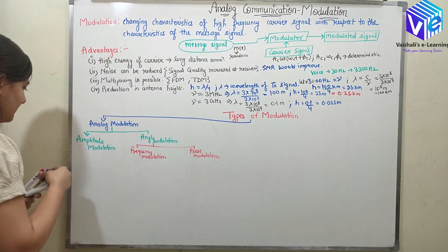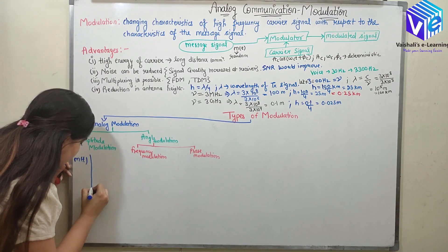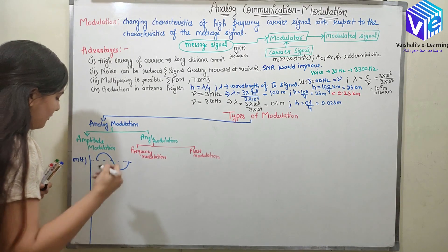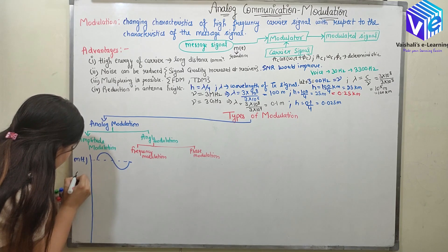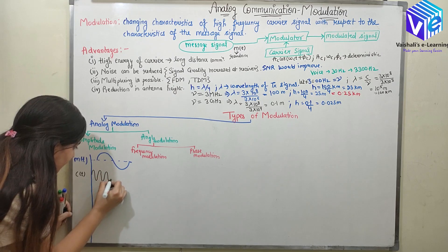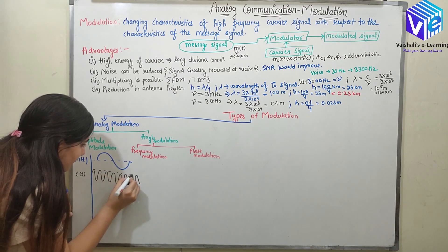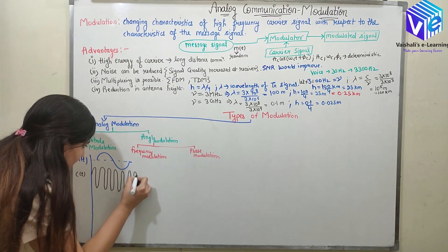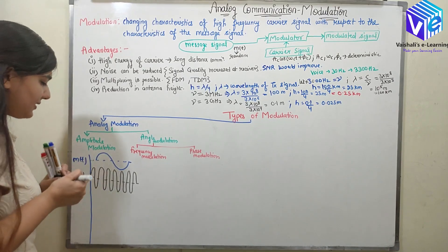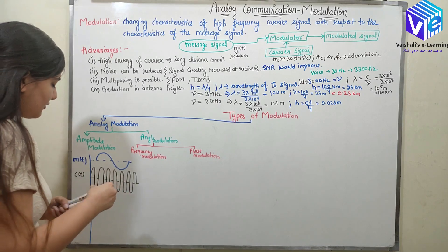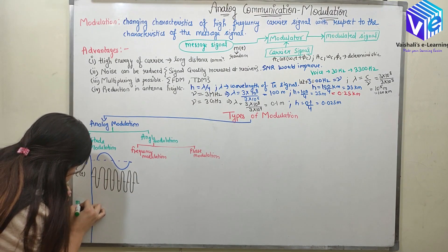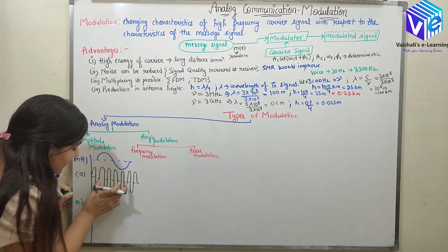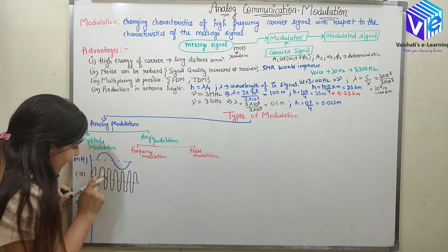Let's suppose our signal is represented — this is our message signal. This is my message signal; it's not starting from zero. Now this is my carrier signal C(t). I drew the carrier signal such that the amplitude of the carrier signal is more than the message signal. Now this is my modulated signal M'(t). Here the amplitude is modulated with respect to the amplitude of the message signal — the amplitude of the carrier is changed.